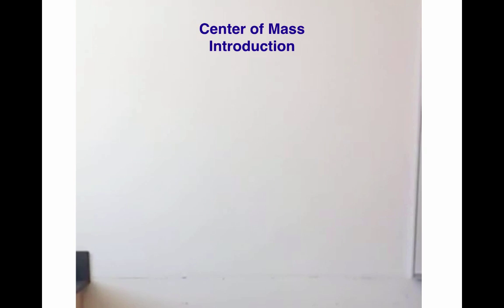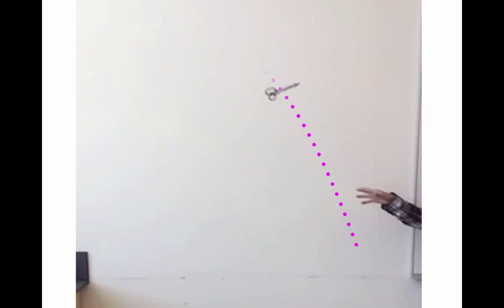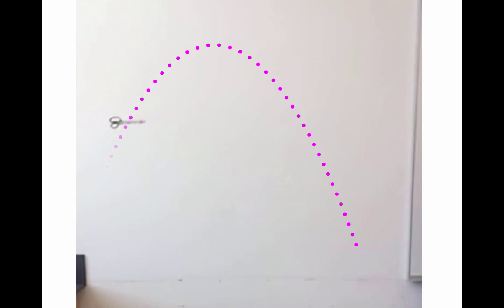To begin, I want to show you a movie I made with one of my students. I asked the student to toss a pair of scissors through the air while I took a slow-mo movie on my iPhone. The motion at first looks pretty complicated, but there's actually one point that follows a simple parabolic trajectory, and that point is the center of mass.